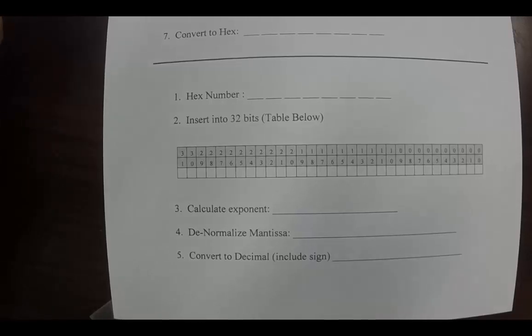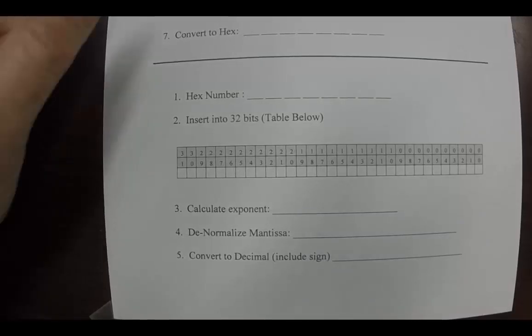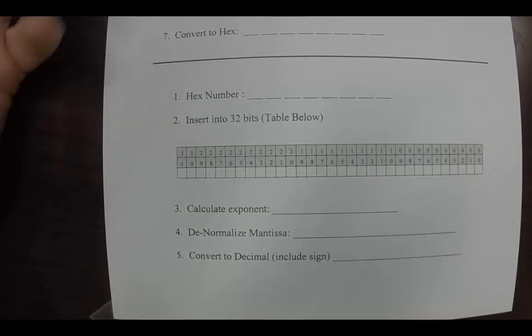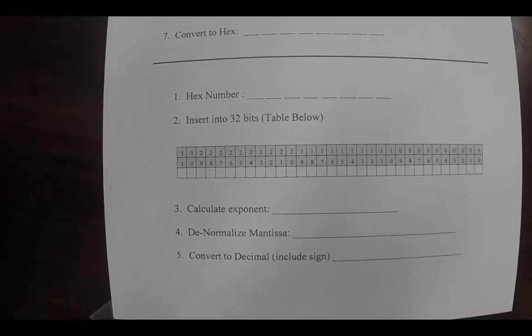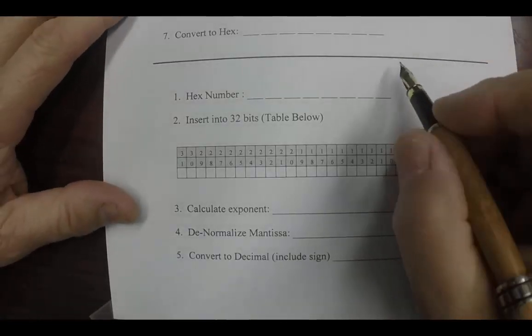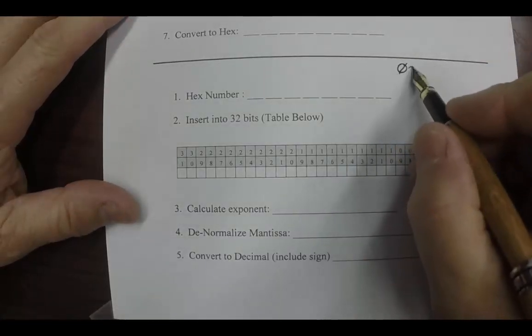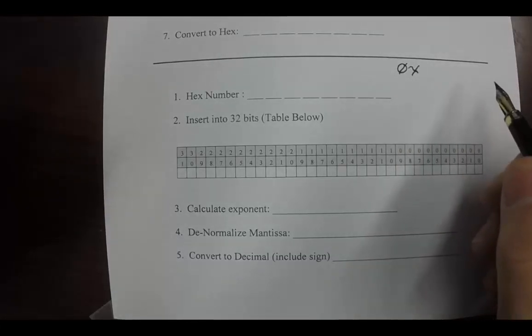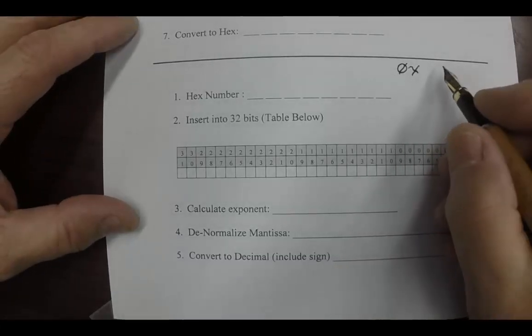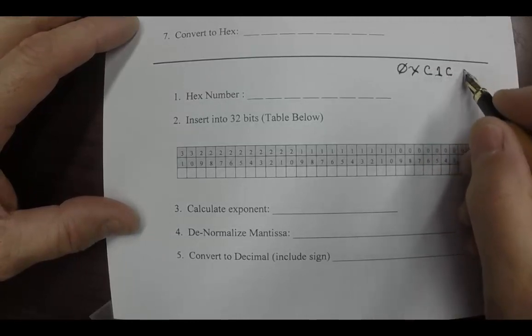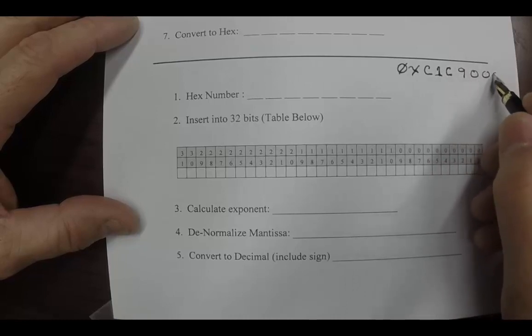In a previous video I showed you how to take a base 10 number in decimal and convert that into an IEEE 754 format. Now I'm going to show you how to go in the other direction. We start off with a hexadecimal number, and they're usually in this format. It usually starts out with a zero followed by an X, which says this is a hexadecimal number, and then the eight character number itself.